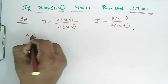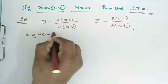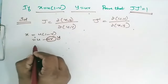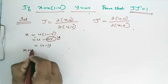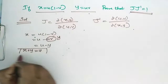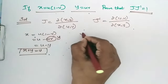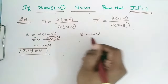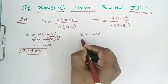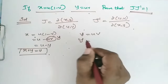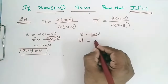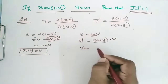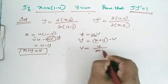Now, x is equal to u(1 minus v), which is equal to u minus uv. Since uv is y, we have x equals u minus y, so x plus y is equal to u. Now, y is equal to uv, which is (x plus y) into v. So v is equal to y by (x plus y).